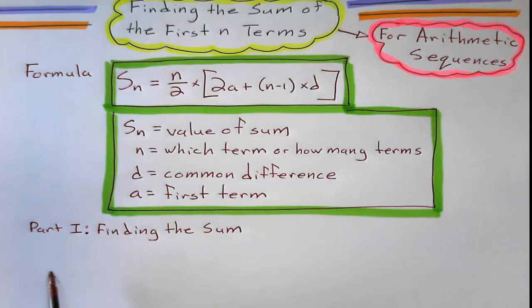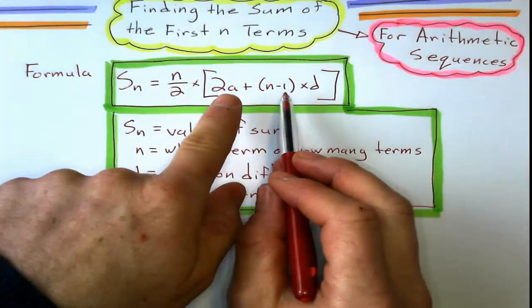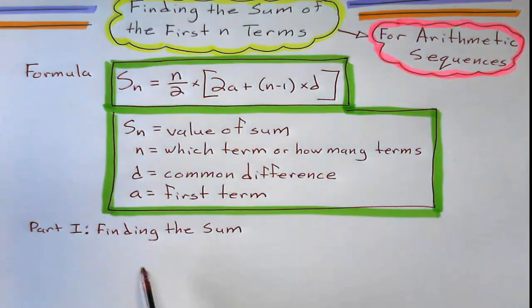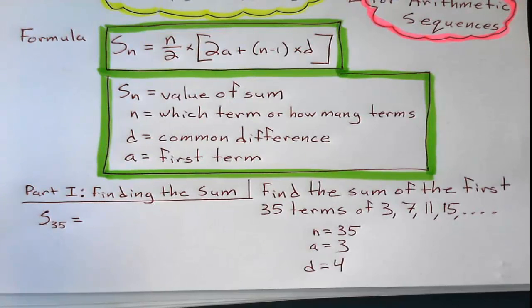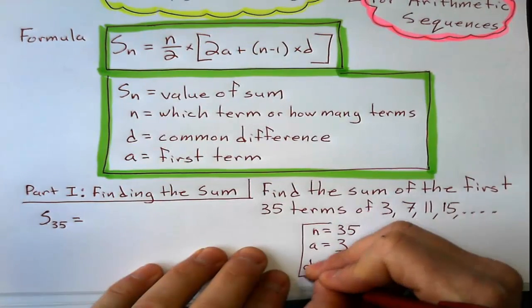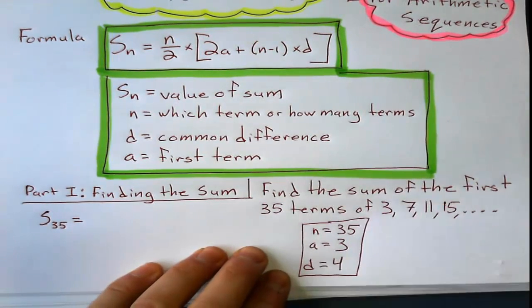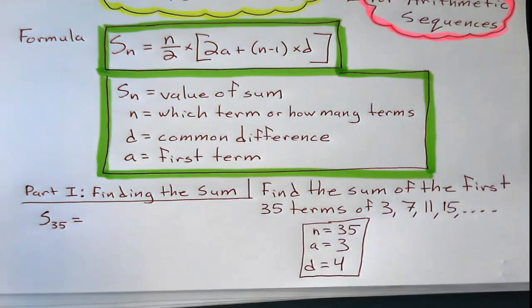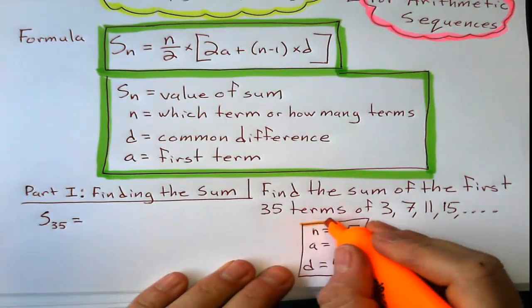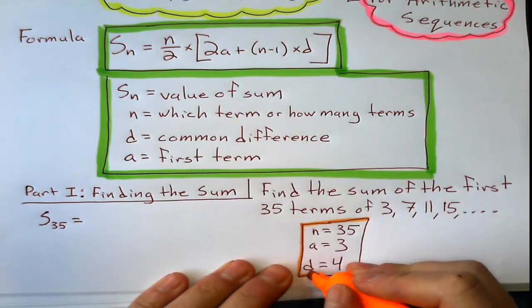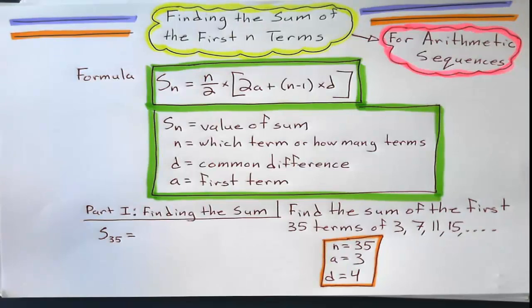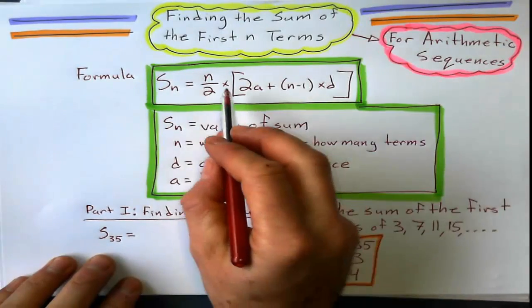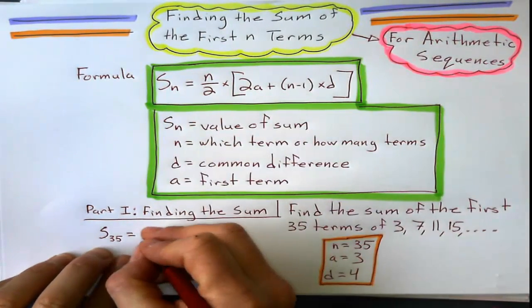So the first part is it's going to be finding the sum of a certain number of terms, and that's the easiest bit because we just substitute everything into the formula here. So let's try that. These are kind of the golden nuggets we're going to use for the problem.